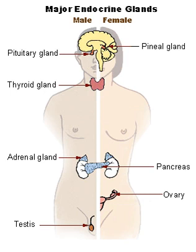Juxtacrine signaling is a type of intercellular communication that is transmitted via oligosaccharide, lipid, or protein components of a cell membrane, and may affect either the emitting cell or the immediately adjacent cells. It occurs between adjacent cells that possess broad patches of closely opposed plasma membrane linked by transmembrane channels known as connexons. The gap between the cells can usually be between only 2 and 4 nanometers.